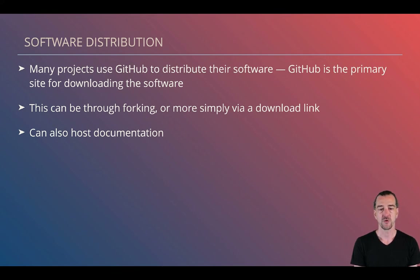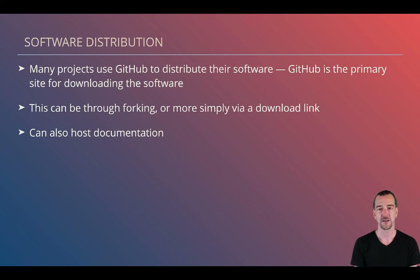Many companies and individual developers use GitHub to distribute their software, and it's the primary site for distributing many software packages. You can do this through forking or via a download link. You can also host documentation on GitHub — most full-blown software packages have extensive documentation on a separate site like readthedocs.io, but readme.md files can contain basic introductory documentation, which may be sufficient for smaller packages.